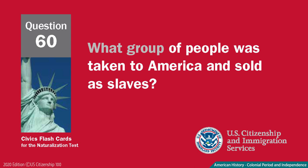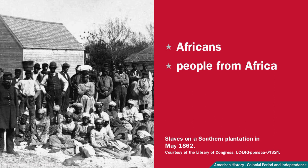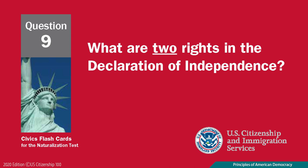What group of people was taken to America and sold as slaves? Africans. What are two rights in the Declaration of Independence? Liberty and pursuit of happiness.